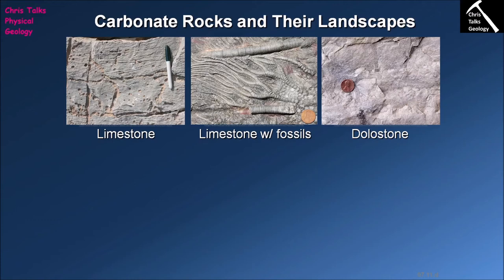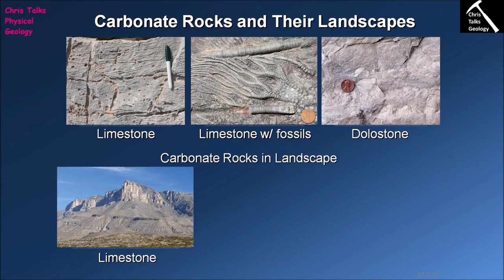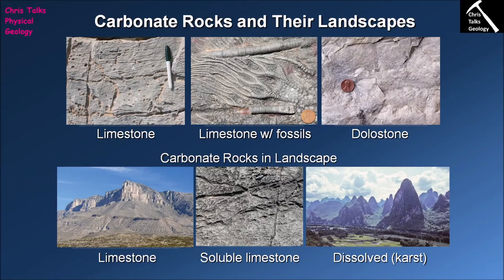In terms of limestone formation, the process is relatively straightforward — you simply need an environment in which you can form a high enough concentration of carbonate material; that's your controlling factor. As for where carbonate rocks appear in the landscape, limestone is often quite a resistant rock. Although it's prone to reacting with acidic water, limestone is actually quite robust and will tend to form topographic highs. We can see this with the large limestone bluff here, while the surrounding mudstones are obviously eroding much faster.